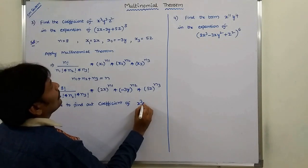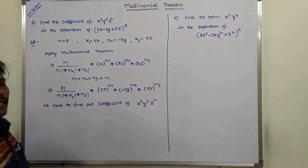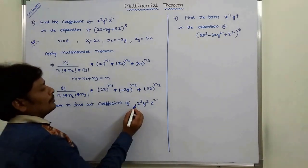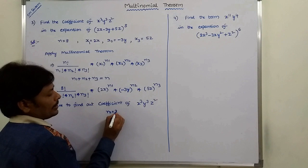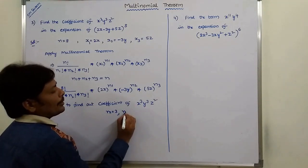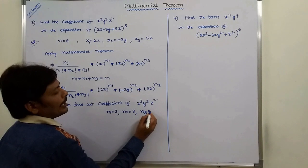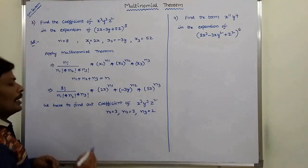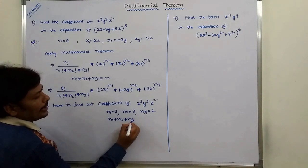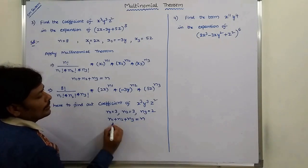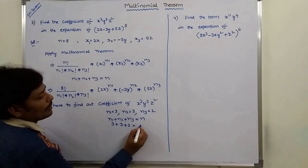We have to find the coefficient of x cube, y cube, z square. So n1 value is 3, n2 value is 3, n3 value is 2. Therefore n1 plus n2 plus n3 equals 3 plus 3 plus 2, which is equal to 8. That is correct.